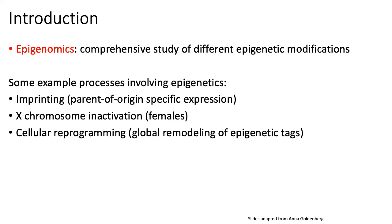Classic processes that involve epigenetics include imprinting, which in humans involves gene expression patterns inherited from one particular parent, necessarily involving shutting down expression of a locus from the other parent. Other processes include X chromosome inactivation, which only happens in female cells, and cellular reprogramming — for example, reprogramming fibroblasts to neurons — which usually necessitates a global remodeling of epigenetics across the entire genome.